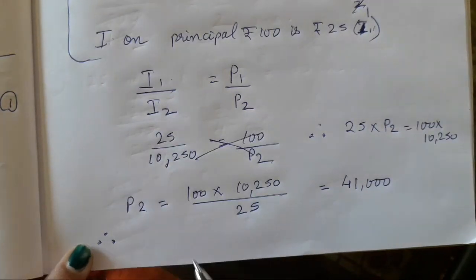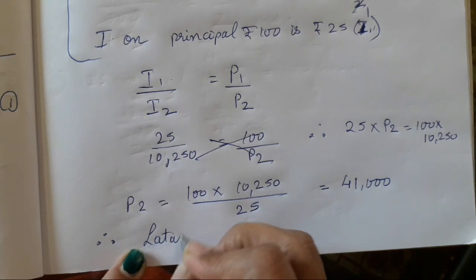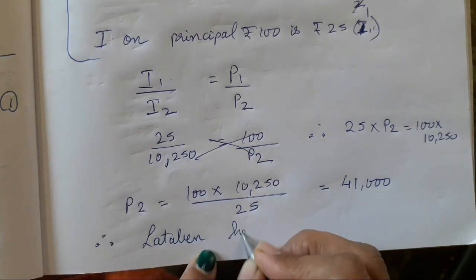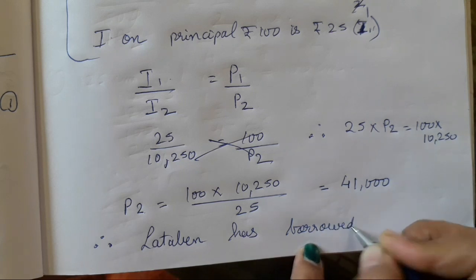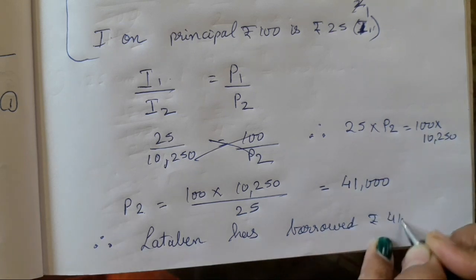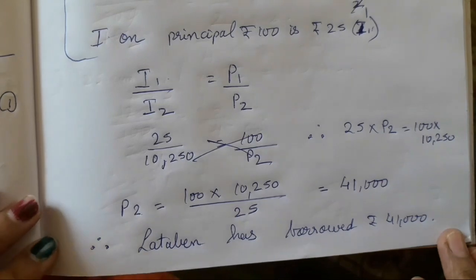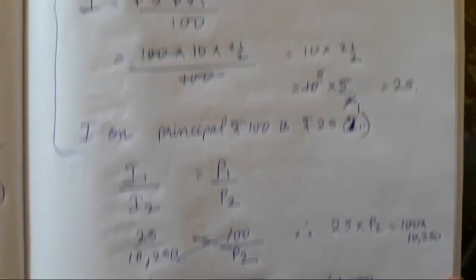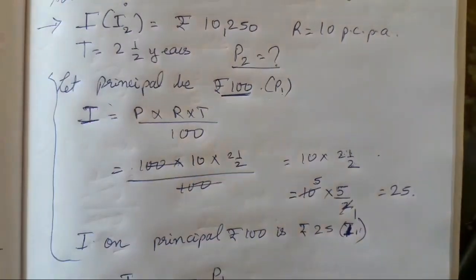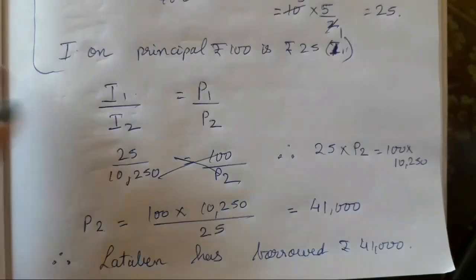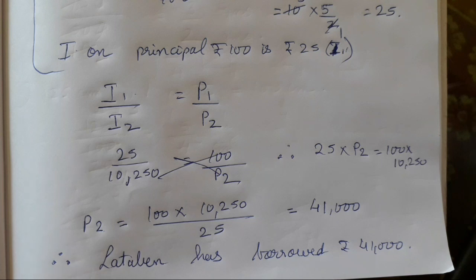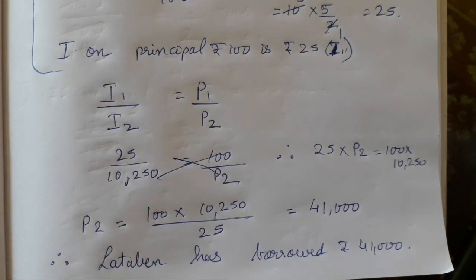So we have got our principal. That is Lata Bain had borrowed rupees 41,000. It is very easy — only the steps you have to remember and keep on solving. The same type of formula is there. Only two types of patterns are given in this exercise.